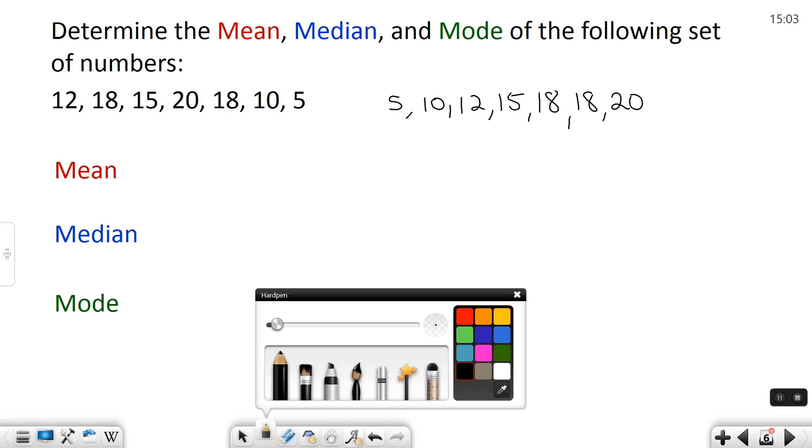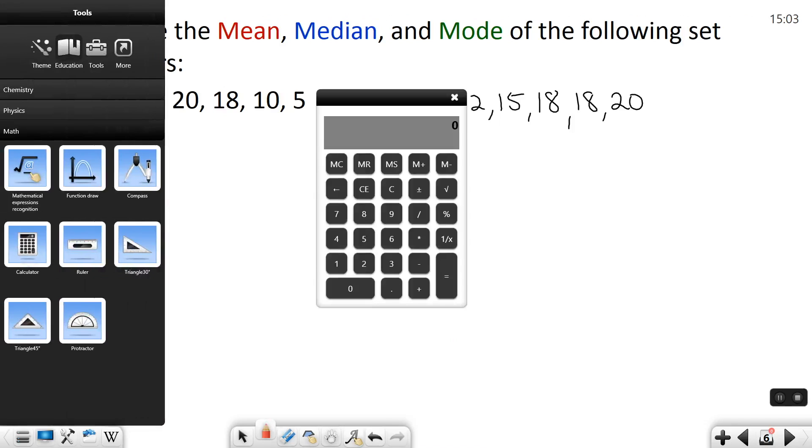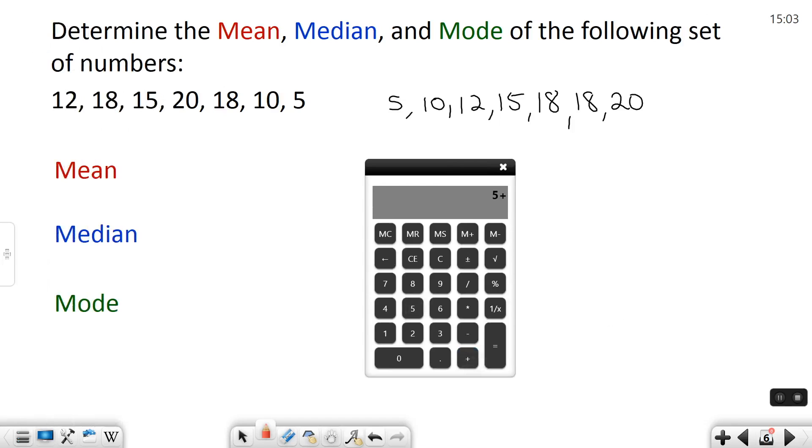To find the mean I'm going to add them all up and divide by however many there are. So let me get the calculator. So we have 5, 10, 12, 15, 18, 18 again, and 20.